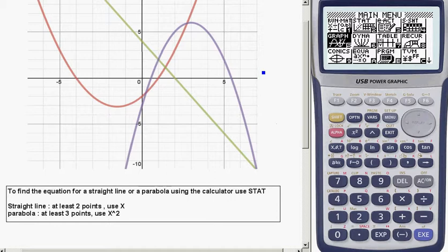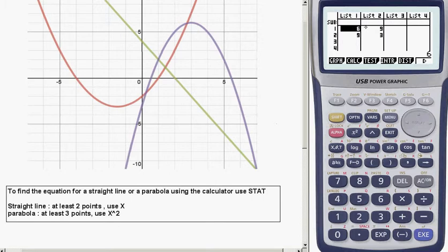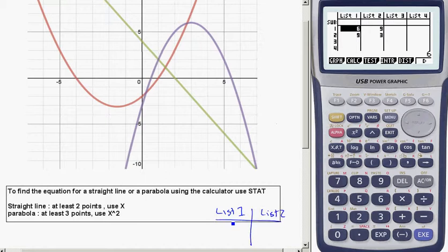So you want to use STAT in your graphics calculator. Find the one that says STAT and press ENTER. And what it's going to ask you to do is actually enter in some points for you. So you can think about list 1 being the x values and list 2 being the y. So what you need to do is read really carefully off of the graph at least two points for a straight line and at least three points for an x squared.